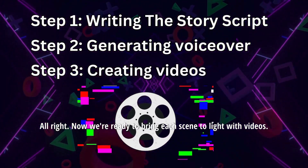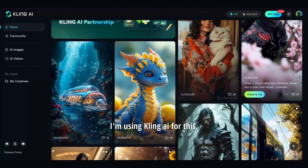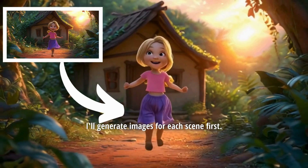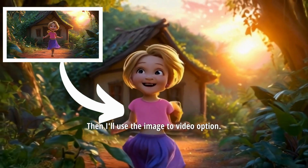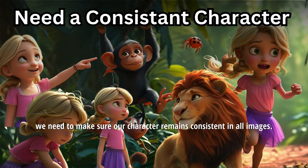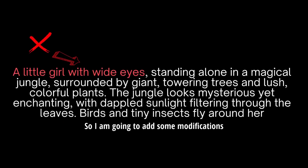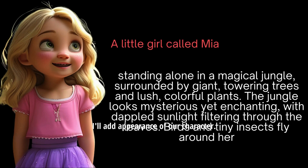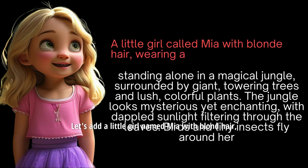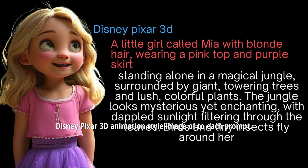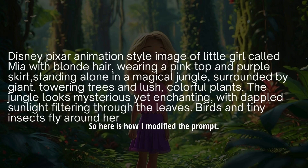Now we're ready to bring each scene to life with videos. I'm using Kling AI for this, but instead of going straight to Text to Video, I'll generate images for each scene first. Then I'll use the Image to Video option. Before we generate images, we need to make sure our character remains consistent in all images. So I am going to add some modifications to the prompts provided by ChatGPT. To the beginning of each prompt, I'll add the appearance of our character — a little girl named Mia with blonde hair, wearing a pink top and a purple skirt. I'll also add the phrase 'Disney Pixar 3D animation style image of' to each prompt. Here is how I modified the prompt. Let's go to the Kling AI website. If you don't have an account yet, just sign up by providing an email and a password.